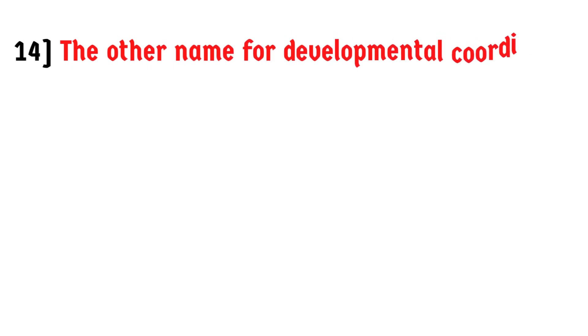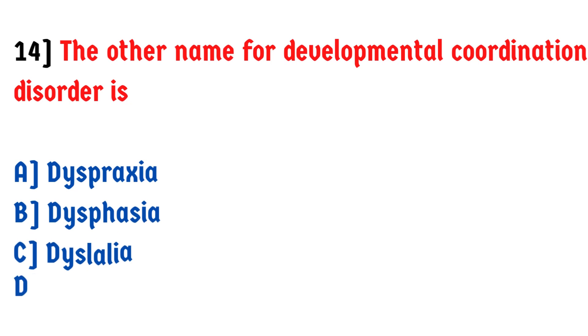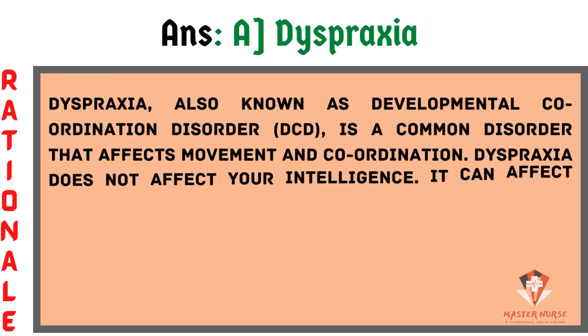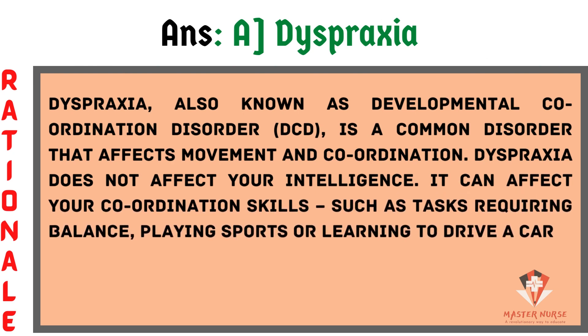The other name for developmental coordination disorder is: A) Dyspraxia, B) Dysphasia, C) Dyslalia, D) Dyscalculia. The answer is A, dyspraxia. Dyspraxia, also known as developmental coordination disorder, affects movement and coordination but does not affect intelligence. It impacts skills such as driving, balancing, and playing sports. Dysphasia is difficulty articulating speech, dyslalia is difficulty comprehending and producing speech, and dyscalculia is difficulty with numerical calculation.